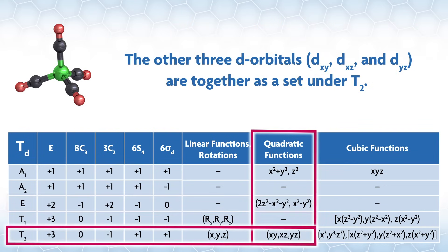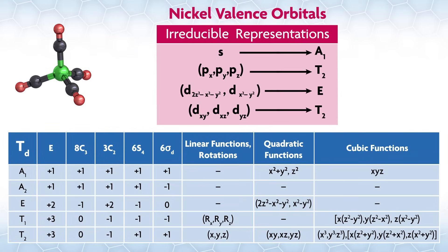The other 3d orbitals, dxy, dxz, and dyz, are together as a set under T2. We have managed to assign all 9 valence orbitals for a central nickel in a Td system.